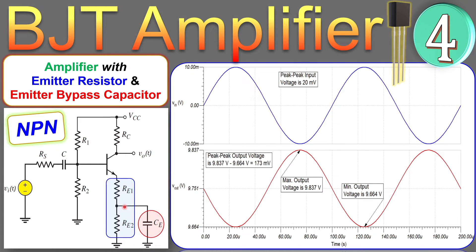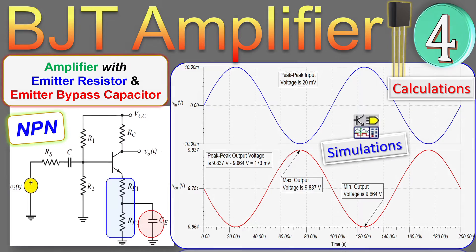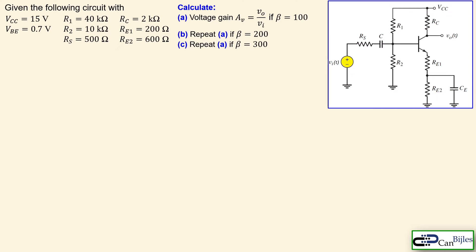The bypass capacitor is now placed across only part of the emitter resistor. We will work out calculations step by step and verify them with SPICE simulations. The emitter resistor is now divided into two parts: RE1 is 200 ohms and RE2 is 600 ohms, together still 800 ohms, but only the partial part RE2 is now bypassed by the capacitor.